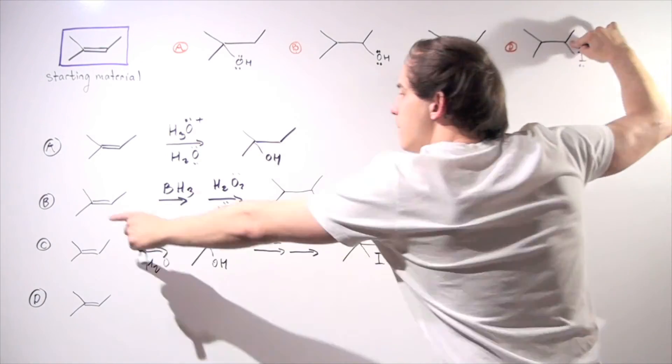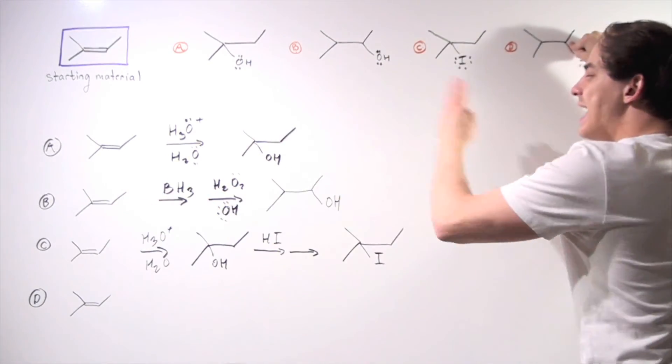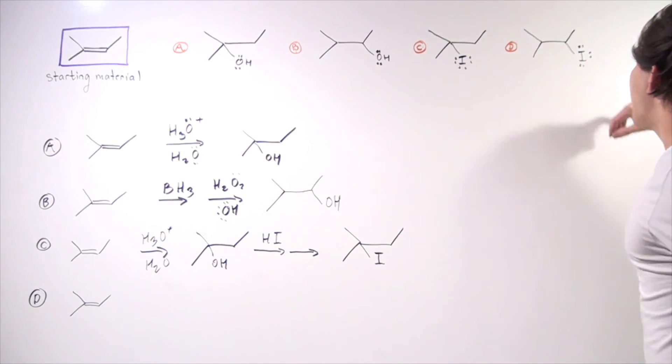So how about we follow mechanism B, reagents B, and at the end, we simply add our HI.